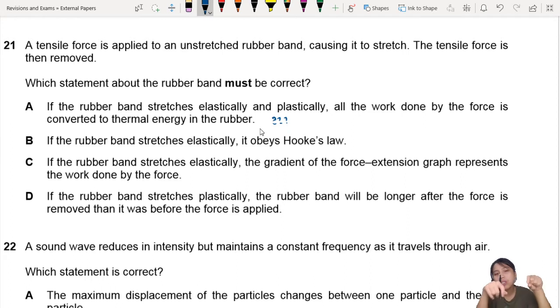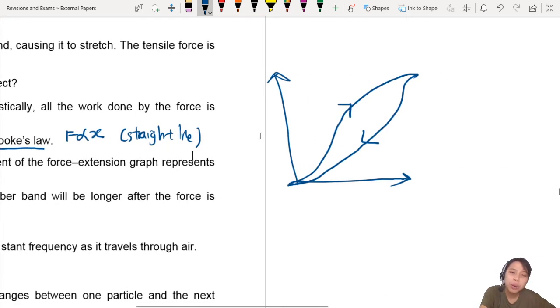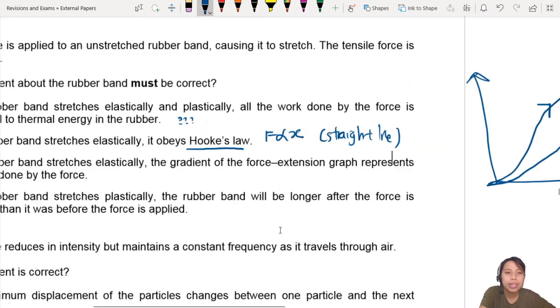Option B: If the rubber band stretches elastically, it obeys Hooke's law. Not necessarily. Hooke's law is a very specific case where force is proportional to extension - it must be a straight line. But rubber band curves have no straight line, so this is not correct.